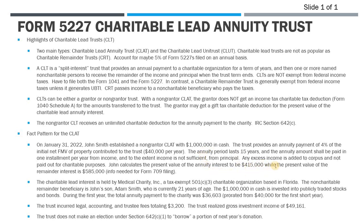This has to be a guaranteed annuity — even if the trust has a very poor year financially, it still has to pay $40,000 to the charity. It comes from income to the extent available, and any excess is pulled from principal. Also very important: any excess income is added to principal, added to corpus, and is not paid out for charitable purposes. The trust agreement could provide that if there is any excess income, the trustee has to distribute it to the charity — that's allowable — but in this case that provision is not in the agreement.